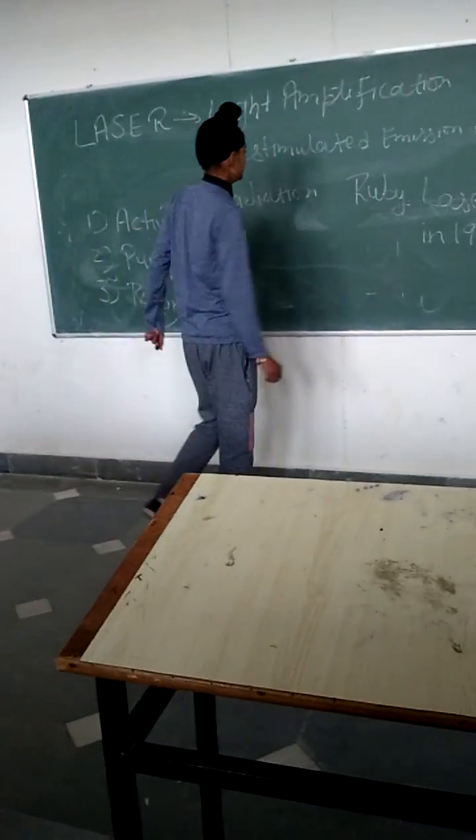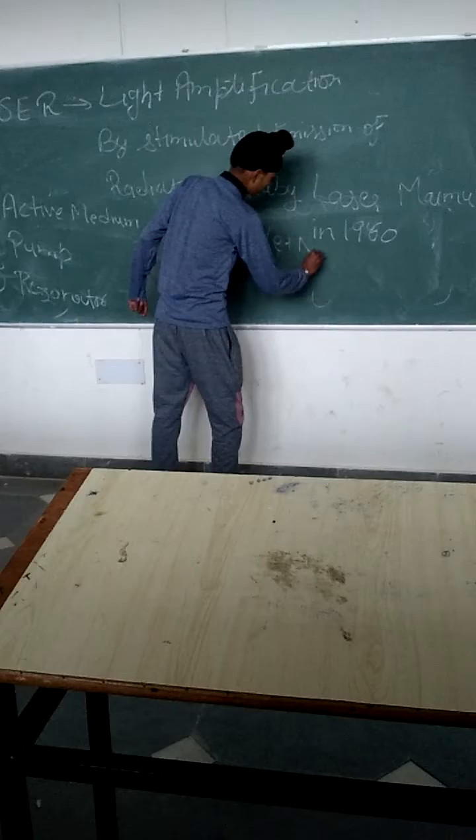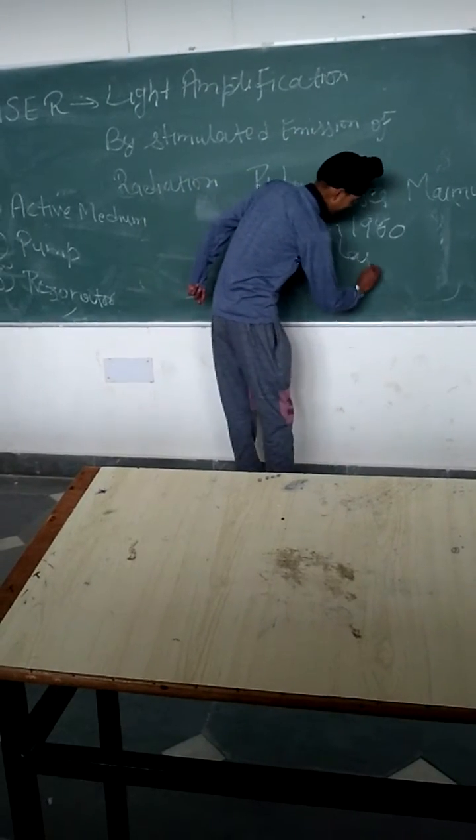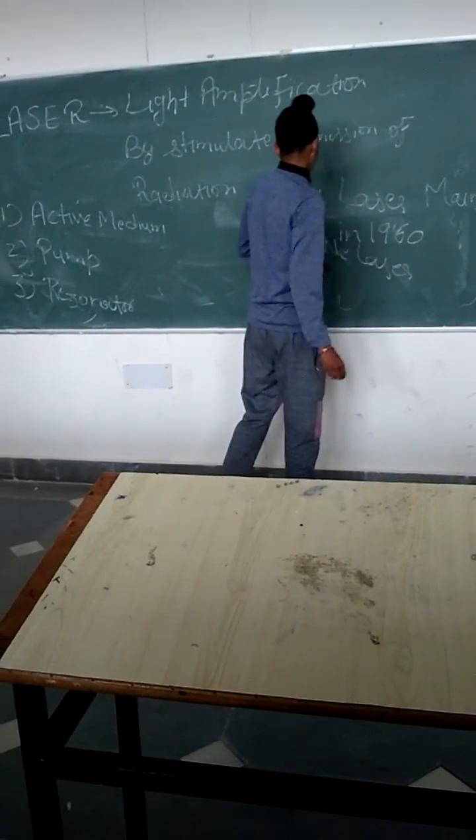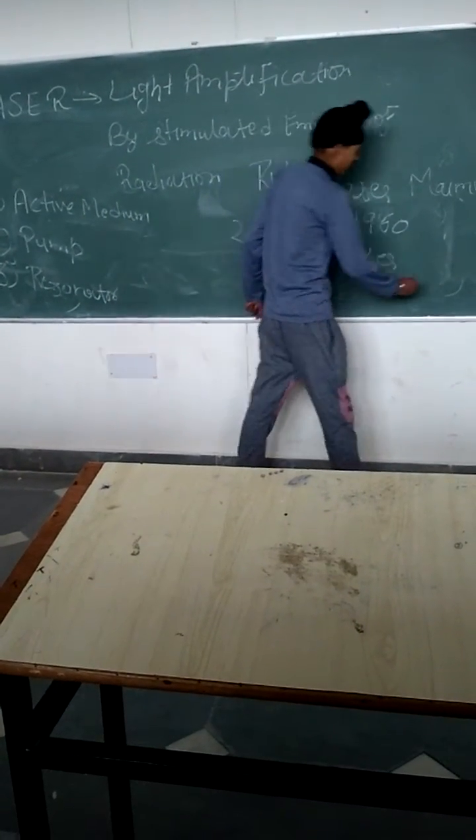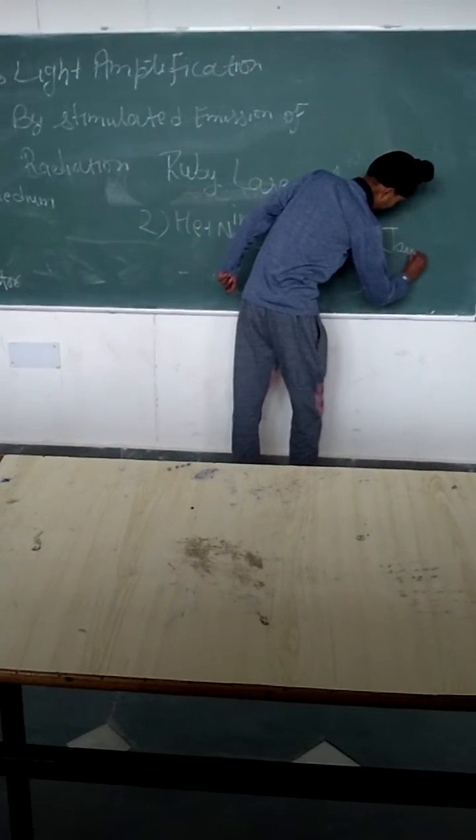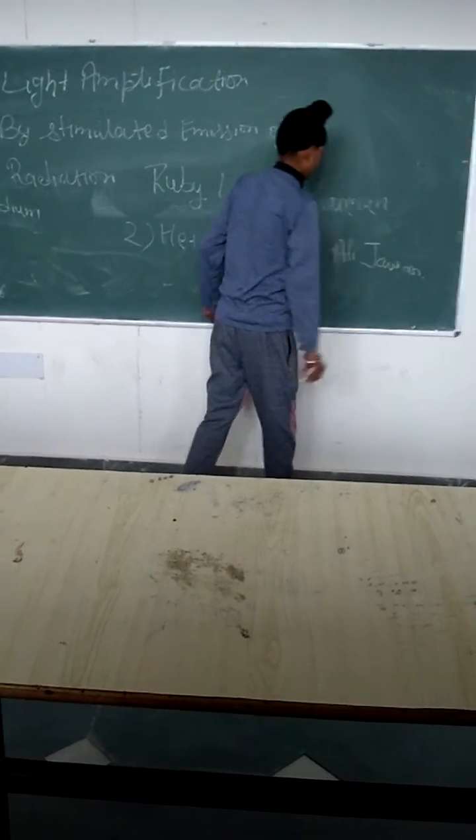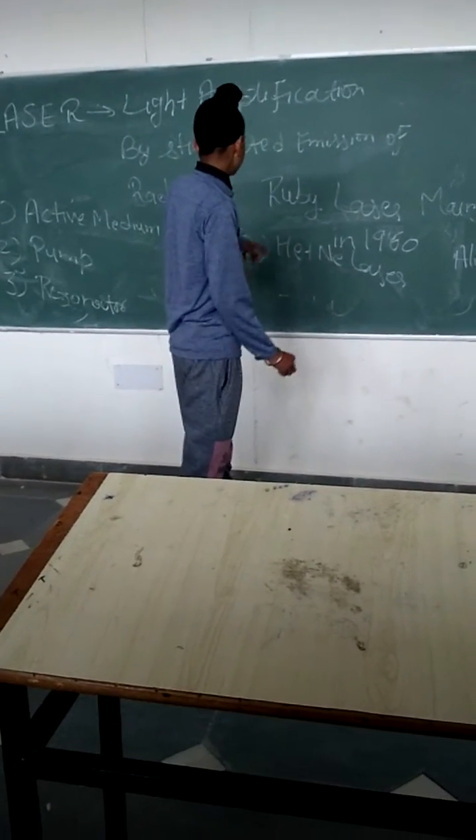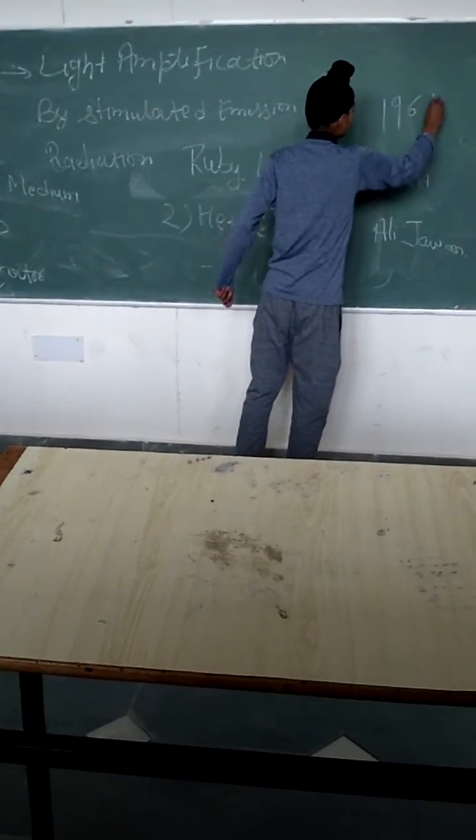World second laser was helium neon laser. Helium neon laser was discovered by Ali Javan. This laser was discovered in 1961.